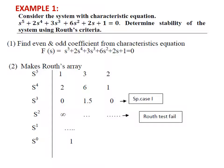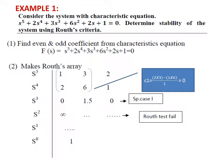We calculate the next value c1. Taking the values 1, 3, 2, 6, we get c1 = (2×3 - 1×6) / 1 = 0. So we have got 0 in the first column of the Routh array. This is Special Case 1 — we have the value 0 in the first column, and after that we cannot calculate further values, so the Routh test will fail.